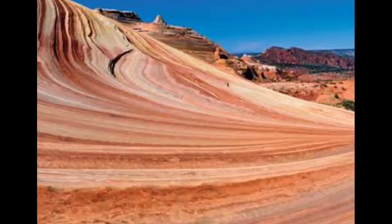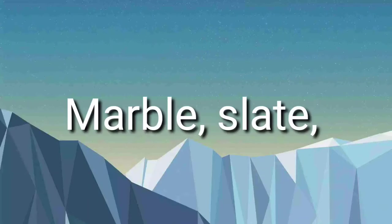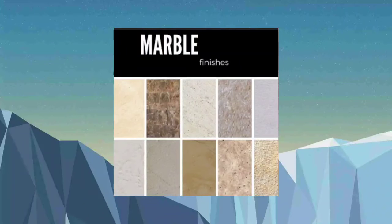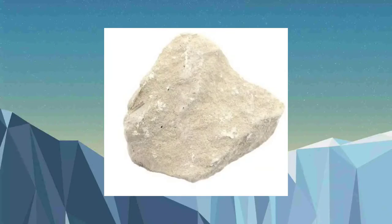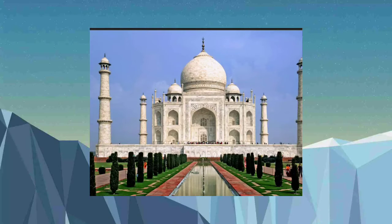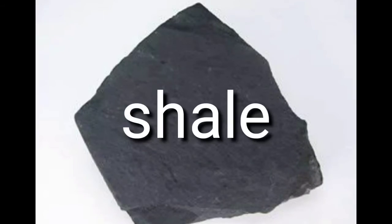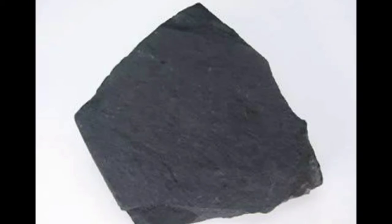The best examples for metamorphic rock are marble, slate, gneiss, and quartzite. Marble is formed when limestone is changed by heat and pressure — the best example being the Taj Mahal in Agra, which is made of marble. Slate is formed when shale is changed due to high pressure and temperature. It is used to make blackboards and building roofs.